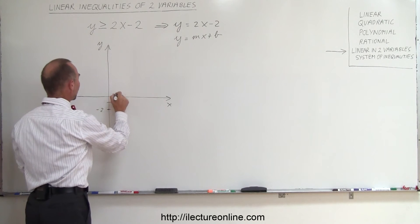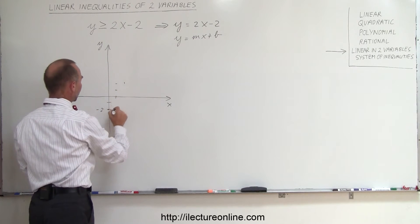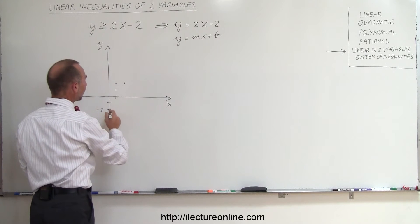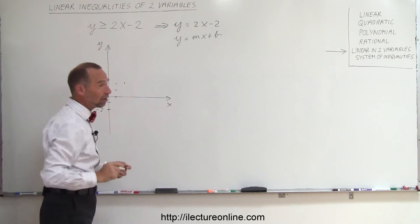That means it rises 2 and runs 1. You go up 2, and over 1, up 2, and over 1, and so forth. And if you connect these dots, that then is the line that represents that equation.